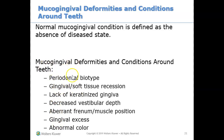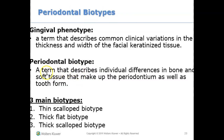Here is a list of all the different types of mucogingival deformities. Let's start with what a periodontal biotype is. Periodontal biotype is a term that explains the differences in bone and soft tissue. There are three types of periodontal biotypes, or three types of tissues around the teeth.